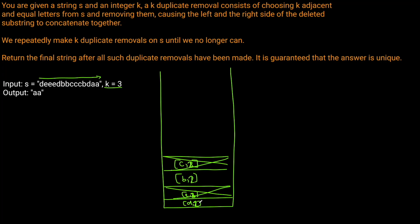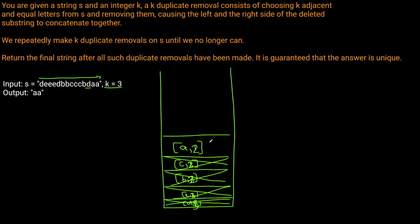After removing the c's, our stack is [d, 2], [b, 2]. Now we get to b again — it equals the top of the stack — and the count becomes 3, which equals k, so we remove it. The stack is now just [d, 2]. Then another d: d equals d, so we increment to [d, 3] — which again equals k — so we remove it too. The stack is now empty. We add a as [a, 1], then see another a, incrementing to [a, 2]. We've reached the end of the string.